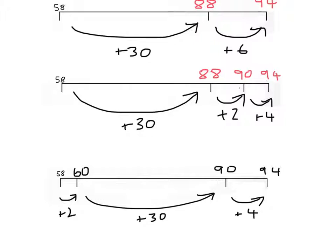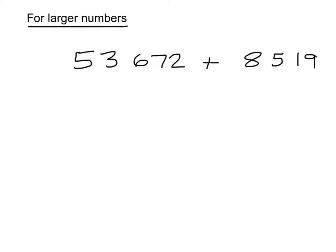These methods are all one and the same, it's just different ways of going about it. For larger numbers, the jumping method isn't a great way to work. It's not really going to help us with numbers like this.